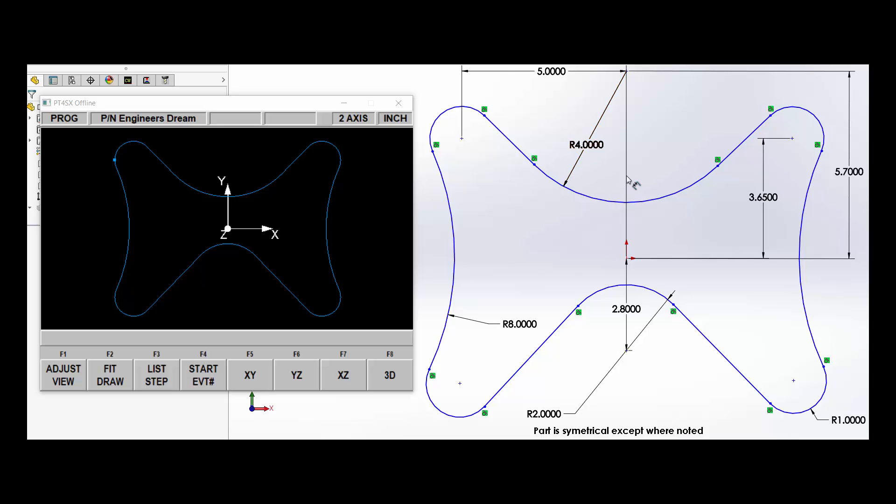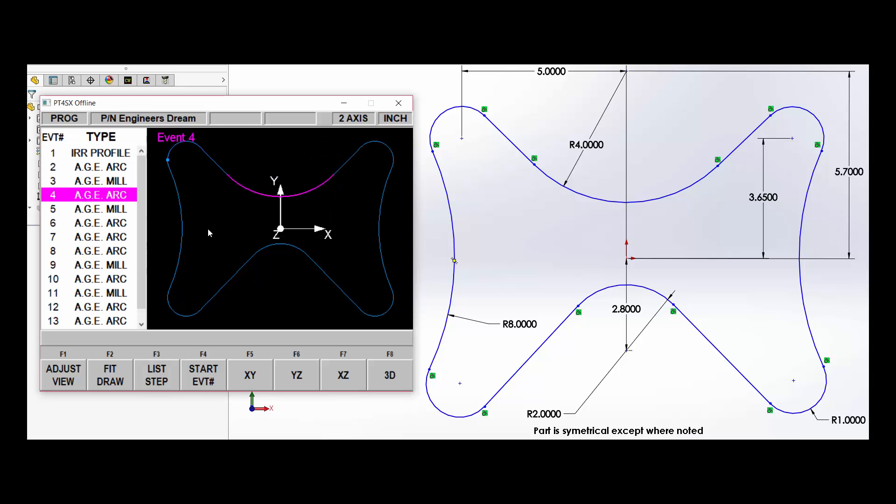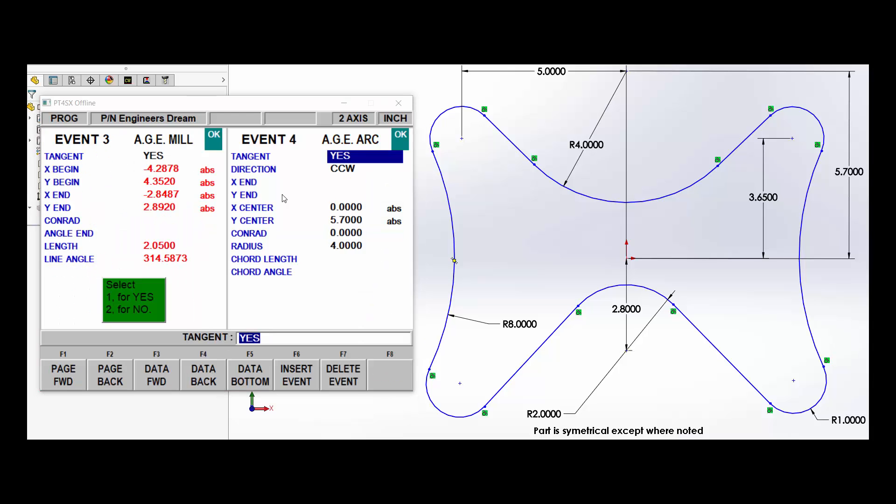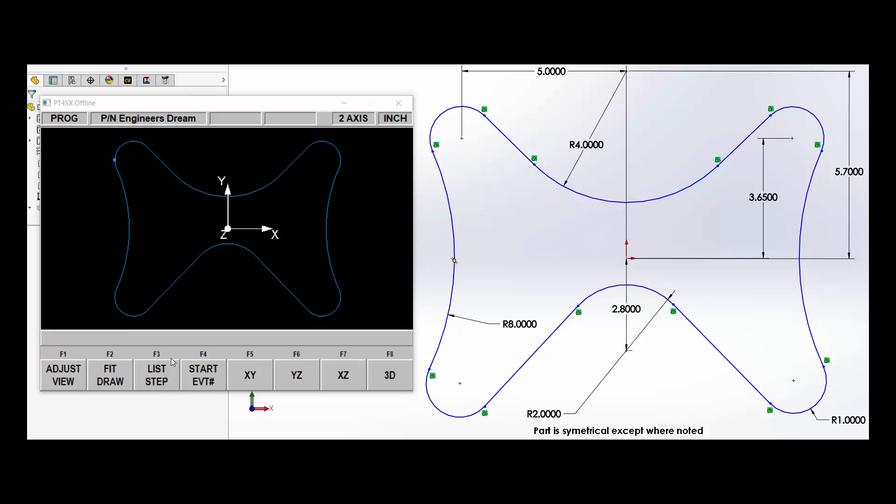So we're going to make an engineering change to that. We're going to come in here to our Look feature, we're going to highlight the thing we want to change and press our Look key, and we're going to come down and change that radius ever so slightly to 3 inches 995. It's done.